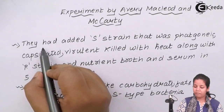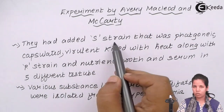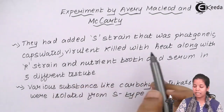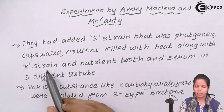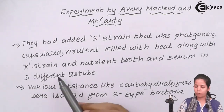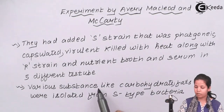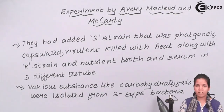What Avery, MacLeod, and McCarty did was they added the heat-killed S strain, which was the pathogenic capsulated strain, along with the R strain — the non-pathogenic, non-disease-causing strain — into five sets of test tubes with nutrient broth and serum. Various substances were then isolated from the S-type bacteria, such as carbohydrates, fats, vitamins, and enzymes, which were present in the nutrient broth.